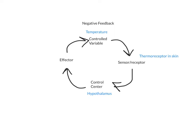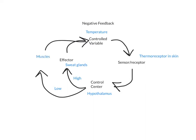Then we move to the effector. In this case, we actually have multiple effectors because different things happen depending on whether the temperature is low or high. If the temperature is high — meaning you are too warm — the effector is going to activate your sweat glands, release sweat onto the skin, and that will cool you down. However, if the temperature is low, we're going to activate muscles. Some of those muscles below the skin shiver, and some also create goosebumps and pull the hairs up on your arms. Both of those things will help bring your temperature back to normal.